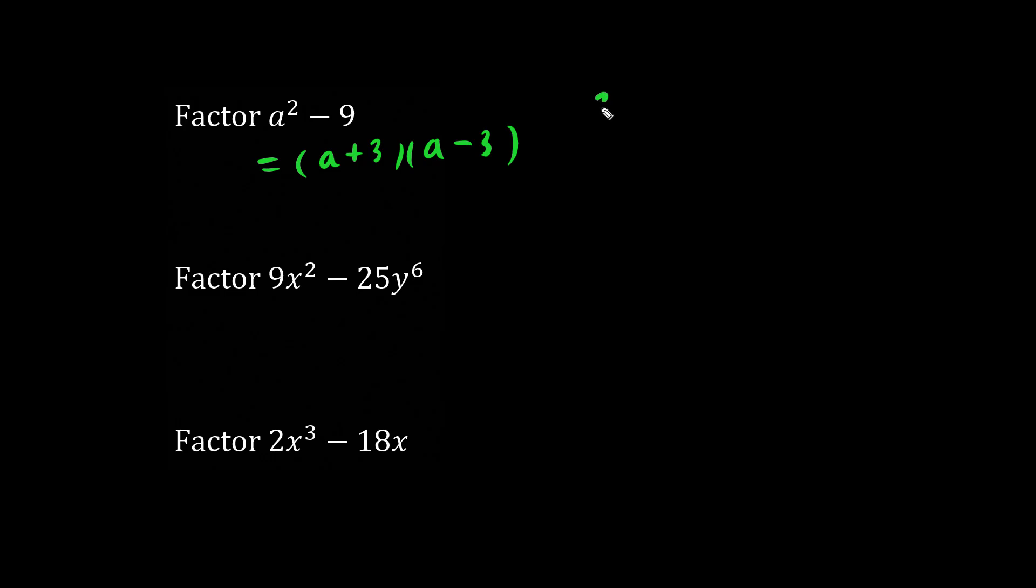So in general, when we have x squared minus y squared, we can factor this to be x plus y and x minus y. Here our x is a and our y is 3.